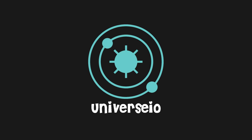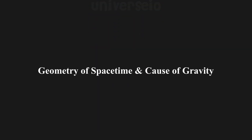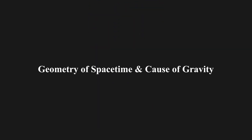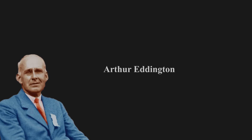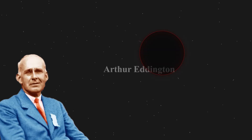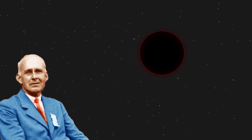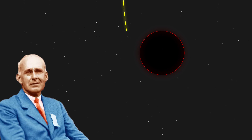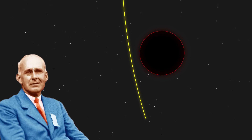Welcome back to Universeo. Today, we explore the geometry of spacetime and the cause of gravity. In 1919, Arthur Eddington led an expedition to observe a total solar eclipse and discovered that light passing near the edge of the sun was deflected on its way to Earth.